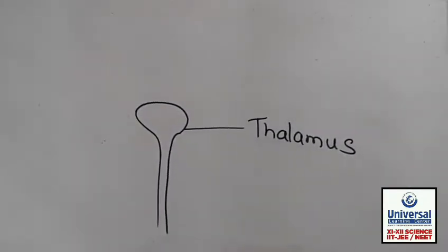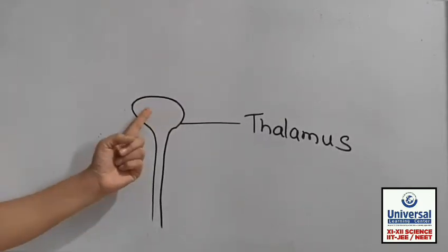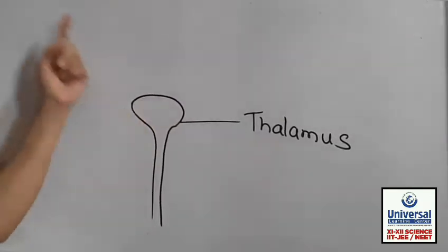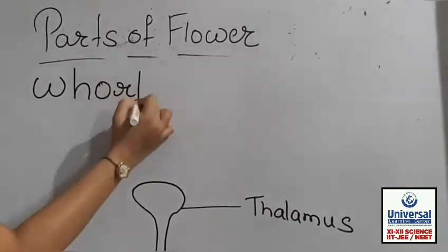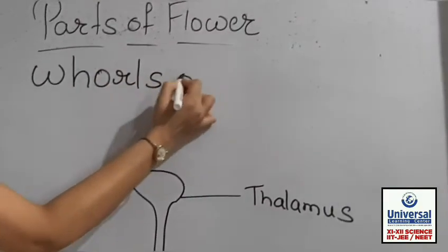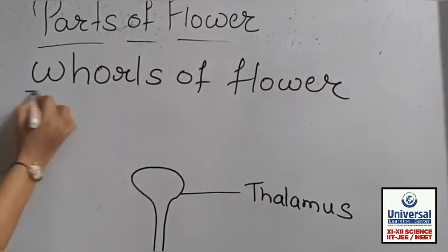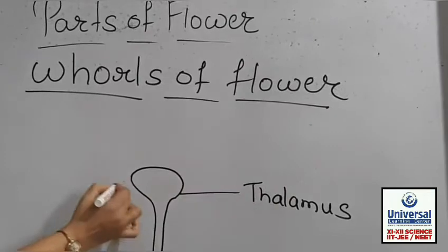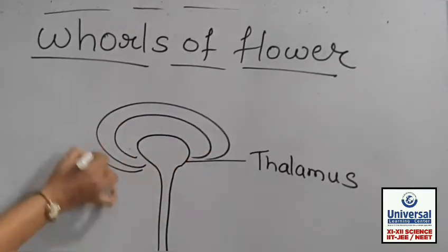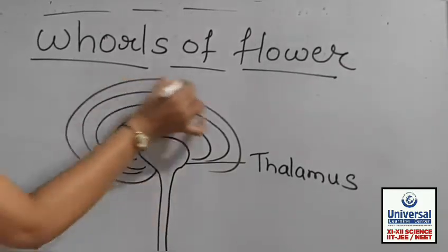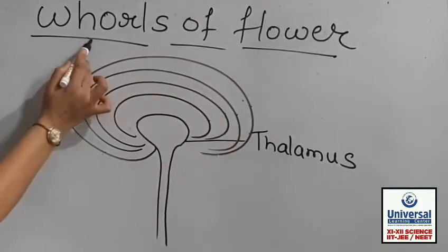The parts of the flower are arranged in layers. We call these the walls of the flower. There is one layer, two layers, a third layer, and a fourth layer. These circular or round layers are called whorls or walls.